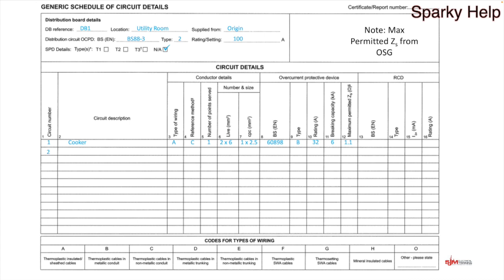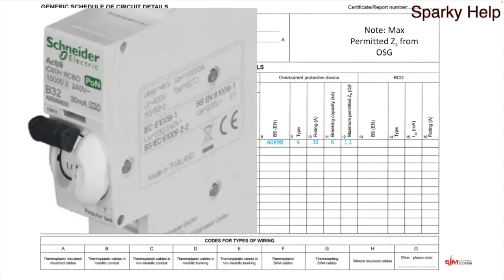Let's go for another circuit — an RCD. So circuit number two: a ring final. This time it's going to be type A wiring again, reference method clip direct. The number of points goes to the number of socket outlets or points of current-using equipment. You don't count double sockets as two — they're still counted as one. I'm going to make a figure up: there are eight sockets on this particular circuit. For conductors on a ring final, there are two lines and two neutrals, so it's 4×2.5. For CPCs there are two cables, so it's 2×1.5. Because they're sockets, we're going to make them RCBOs — the BSEN is 61009-1.